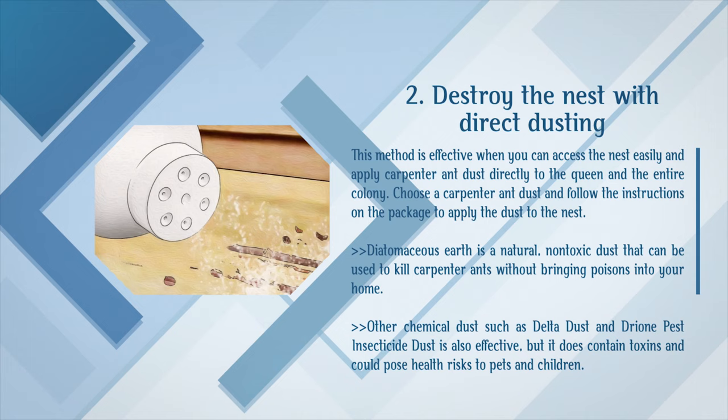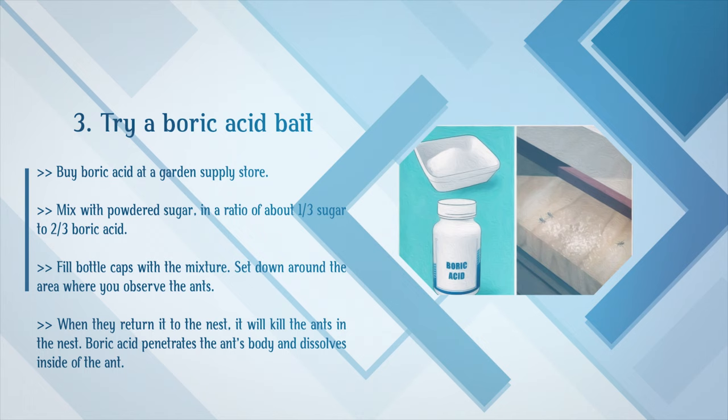Method 3: Try a Boric Acid Bait. Buy boric acid at a garden supply store. Mix it with powdered sugar in a ratio of about one-third sugar to two-thirds boric acid. Fill bottle caps with the mixture and set them down around the area where you observe the ants. When they return it to the nest, it will kill the ants there. Boric acid penetrates the ant's body and dissolves inside of the ant.